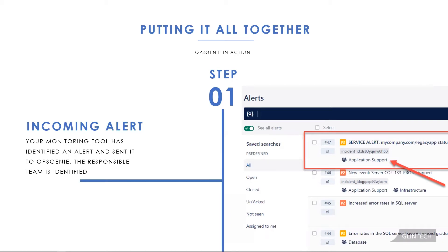Imagine it's 10 p.m., you're at home, and you're on call for your team. You have monitoring tools scanning and checking all of your different systems, and it picks up on something — an application is no longer responding. That generates an alert which is sent to Opsgenie for processing. Your team has configured this integration so that Opsgenie knows it's your team that needs to be notified for quick action to be taken. This alert does not go into some generic pool for a single on-call person to triage.